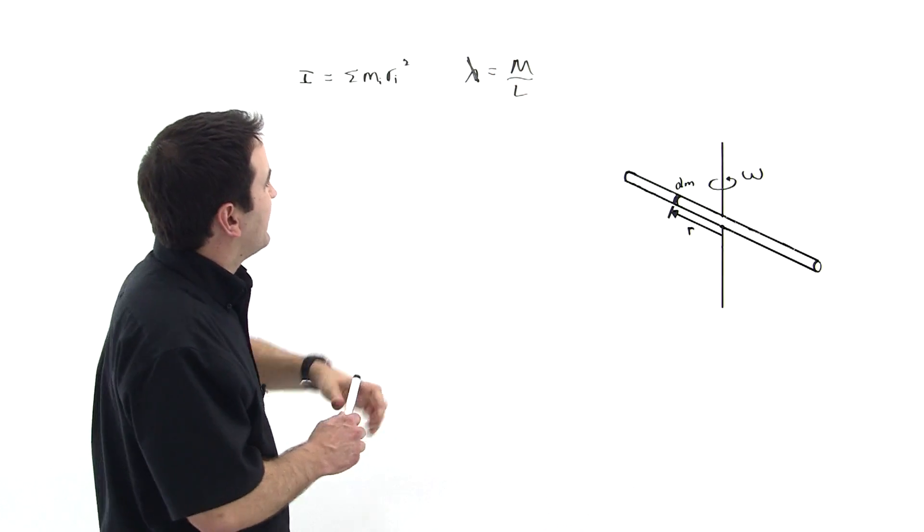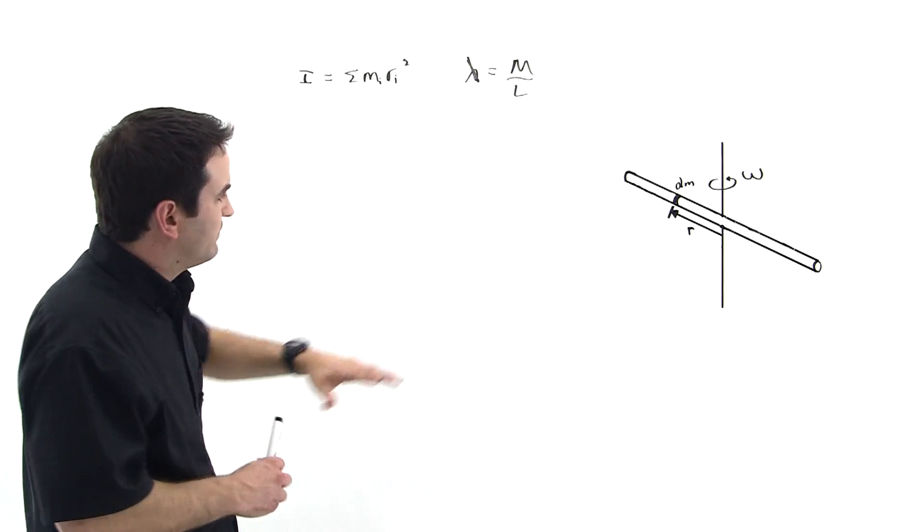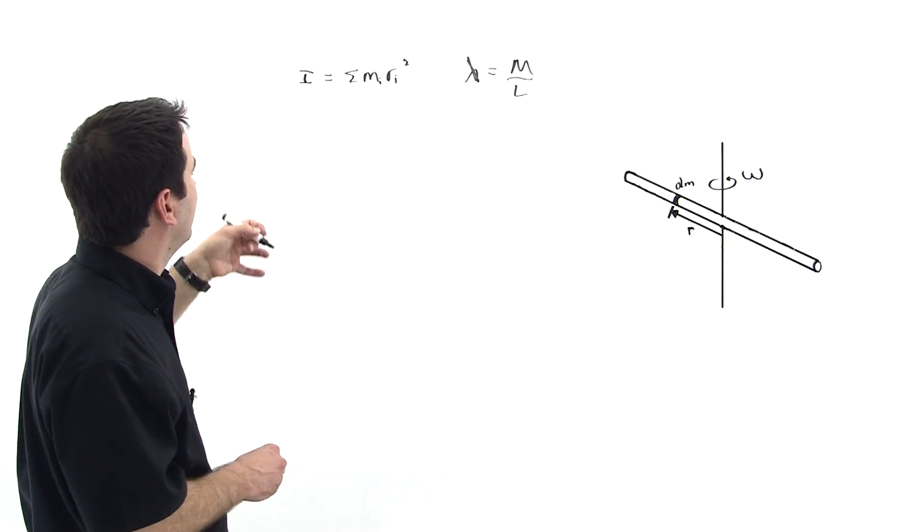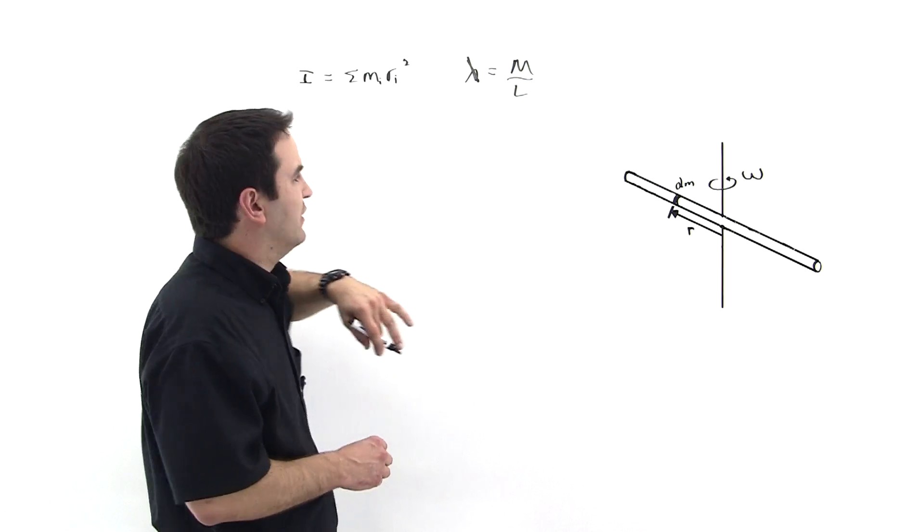So this is the density function for this rod. Both of these being constants, obviously. So it's kilograms per meter of the rod.